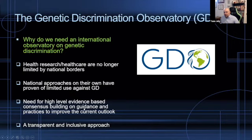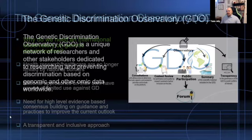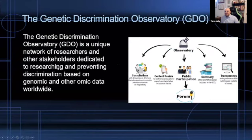We have to put our brains together, work together so that laws and practices are well aligned, and do this in a scientific manner. Science progresses extremely quickly in the field of genetics — so should our laws, policies, and practices to prevent genetic discrimination. To gain the trust of the public and reduce anxiety over genetic discrimination, we should use a transparent and inclusive approach. That's what the Genetic Discrimination Observatory is all about: a unique network of researchers and stakeholders dedicated to researching and preventing discrimination based on genomic and other omic data worldwide, with a big emphasis on inclusion and public access to information.